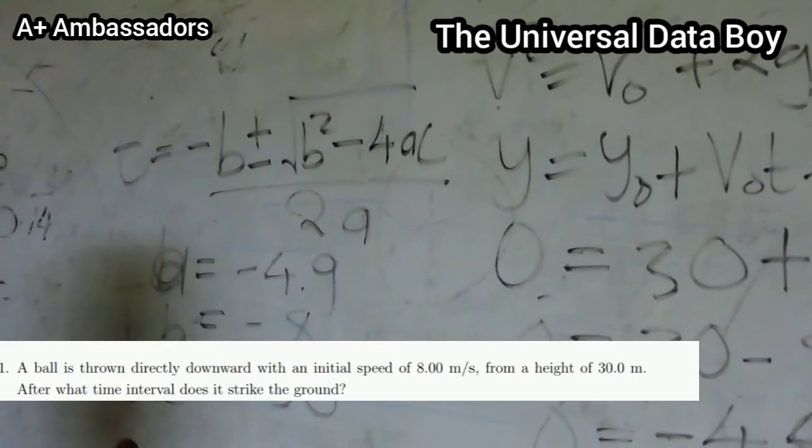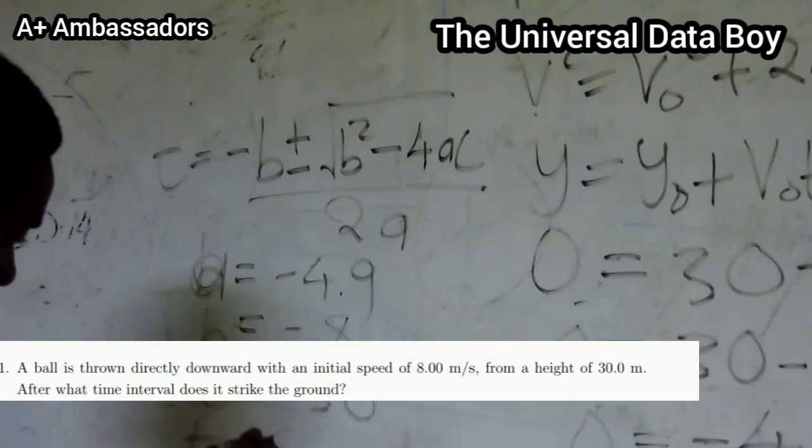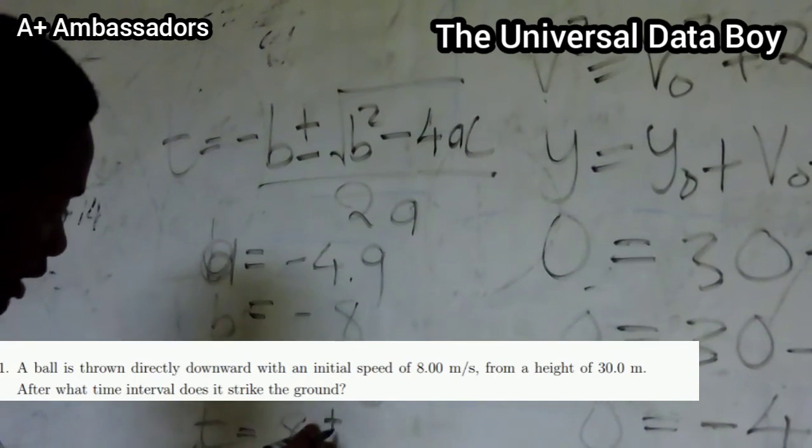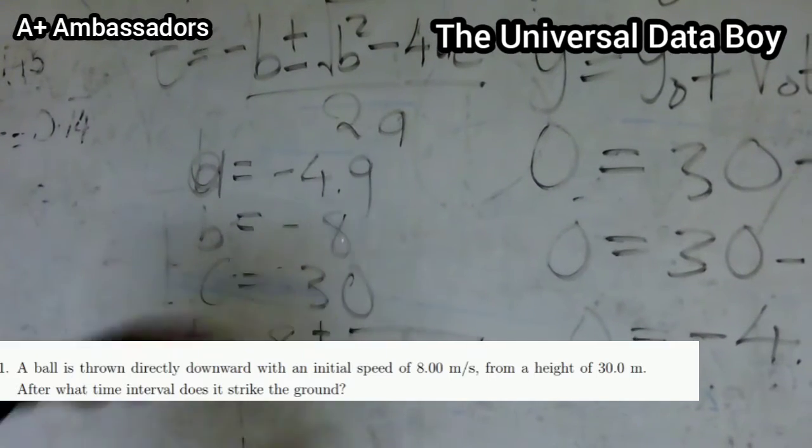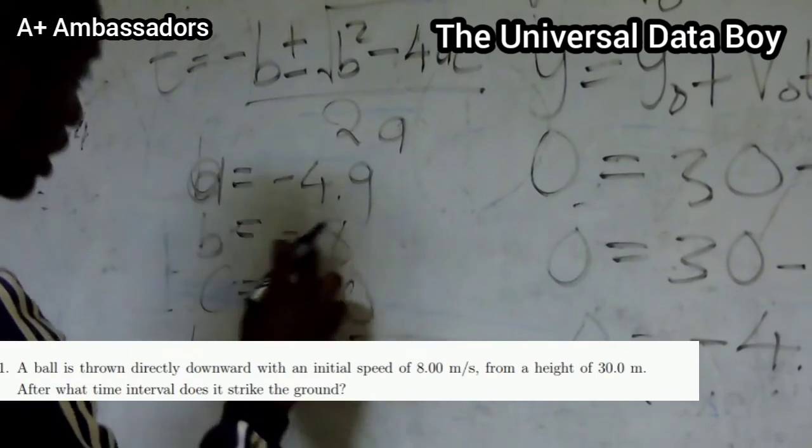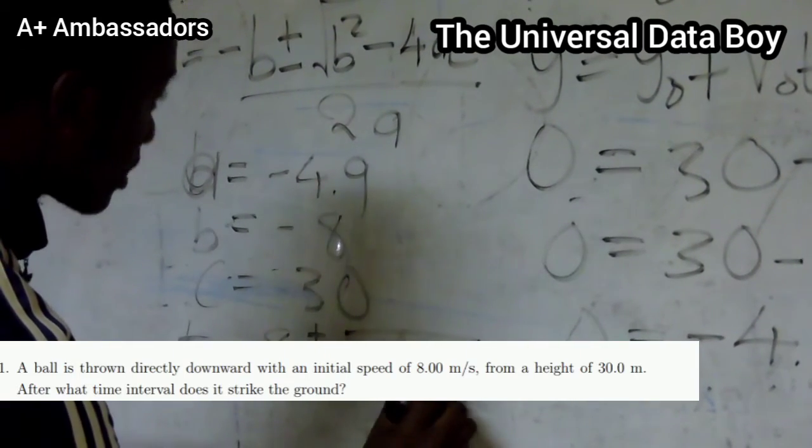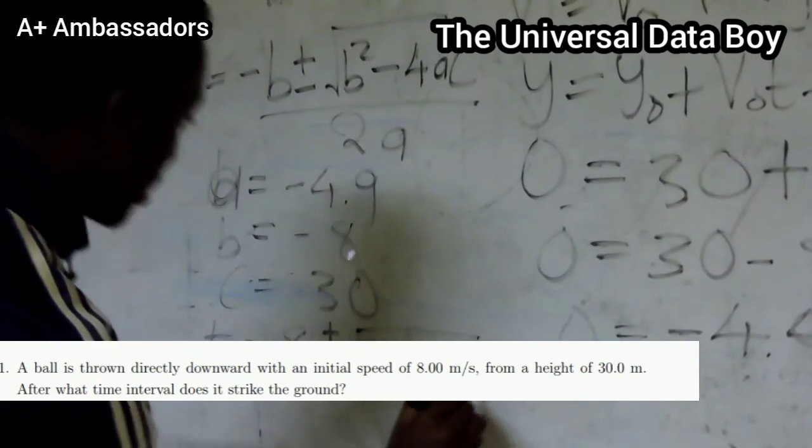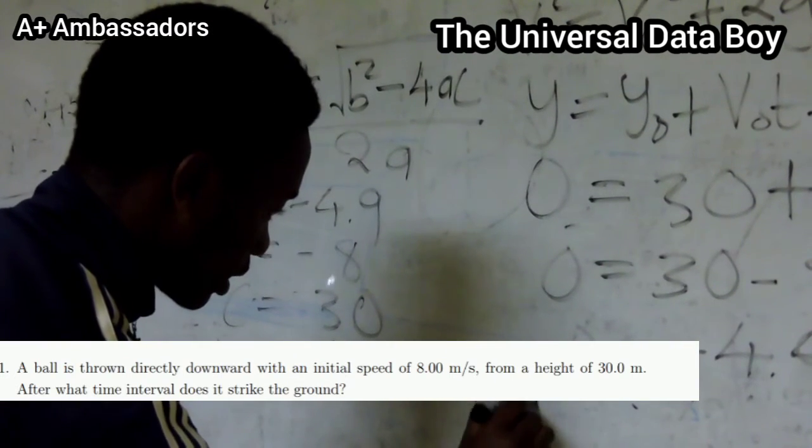Then we get our t. Our t is equal to - A is negative, so this will be positive - 8 plus or minus square root of B which is -8. Negative 8 squared, that's 64.